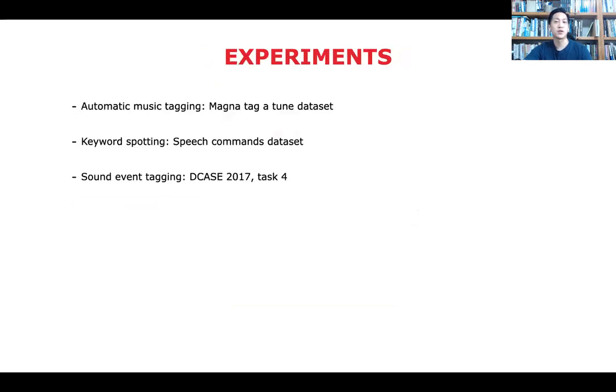We experimented with 3 different tasks: automatic music tagging, keyword spotting, and sound event tagging. Automatic music tagging is a multi-label classification task that aims to predict tags for a given music excerpt. A subset of Magna Tag-a-Tune dataset, which consists of around 26k audio clips, were used.